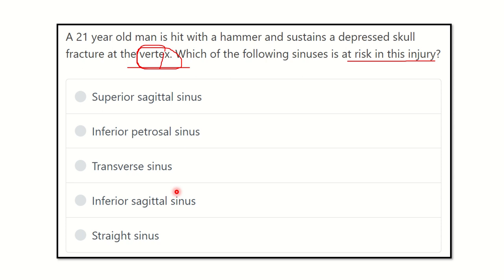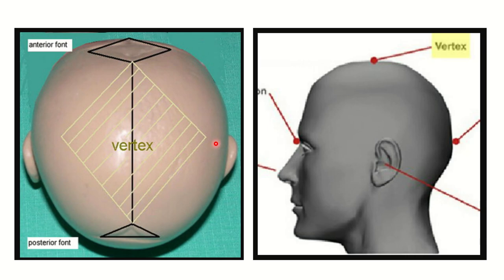Let's find the vertex in the skull. In the first picture, we can see a diamond-shaped area — this is the vertex. It is the middle part of the top of the head. In the second picture, the vertex is the top or highest part of the human skull. It is a diamond-shaped space, and we can see the midline sagittal suture passing through it. Anteriorly it is the bregma, posteriorly it is the lambda.